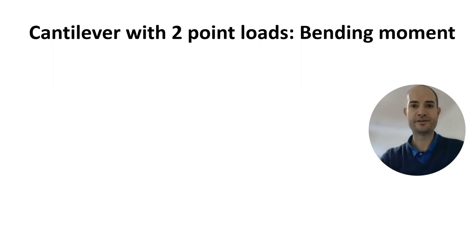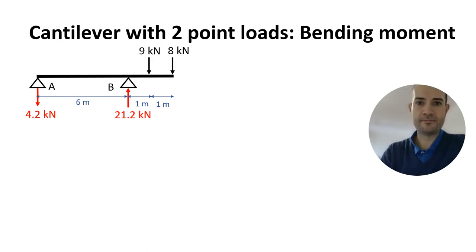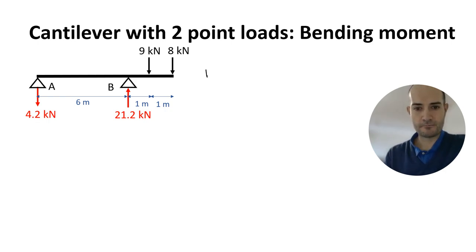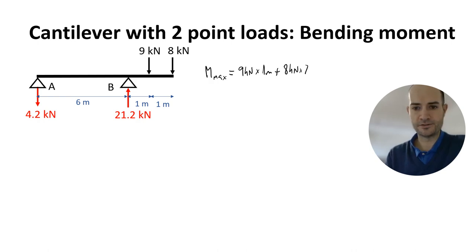Now let's calculate the moment for the cantilever with two point loads. We already know the reactions. The maximum moment on the cantilever is the loads on the cantilever span times the distance to the fulcrum support. In this case: 9 kN times 1 meter plus 8 kN times 2 meters, that's 25 kN·m.